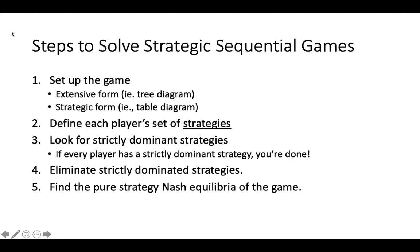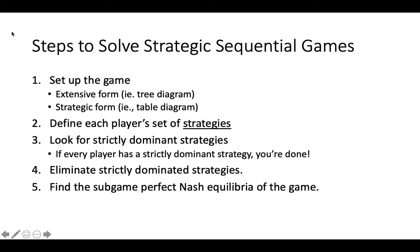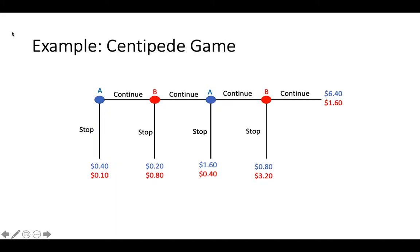During the course of this video, we will discover that when we find pure strategy Nash equilibria of the game, some of these equilibria will not make sense. So instead, what we will do is find a subset of these Nash equilibria called sub-game perfect Nash equilibria. We will start with an example — this diagram illustrates the extensive form of a game called the centipede game.